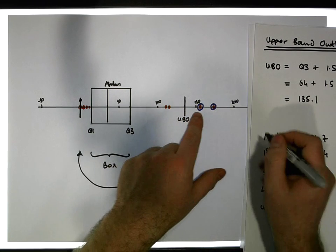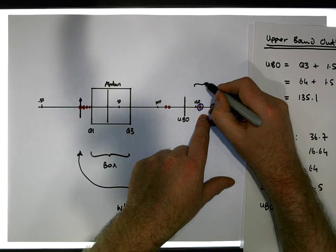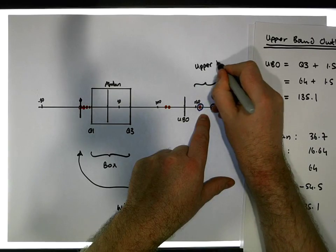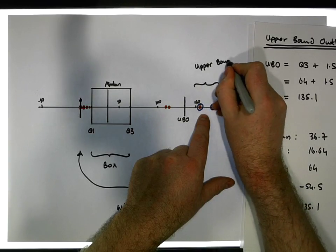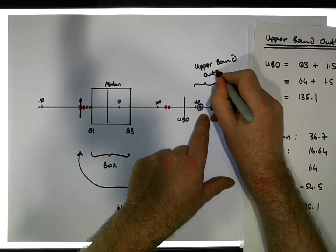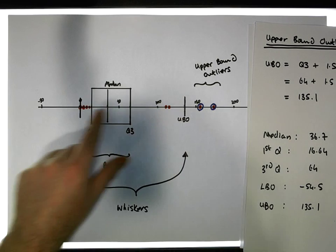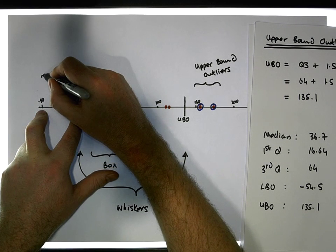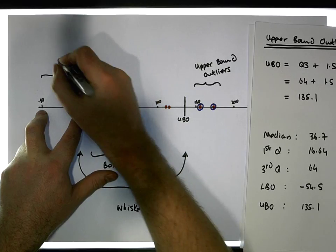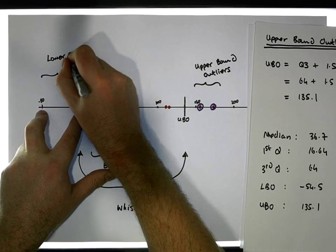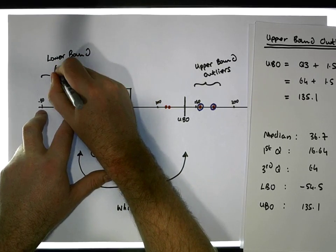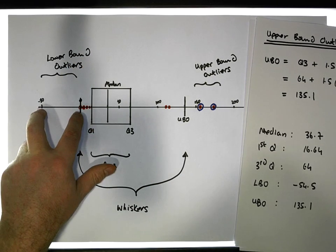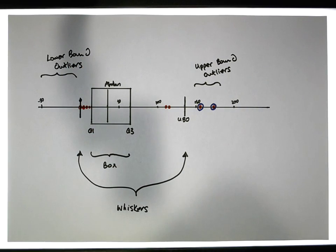So what we end up with is the box and two whiskers. Anything bigger than the upper bound outlier threshold is classified as an upper bound outlier, and anything less than the lower bound outlier threshold would be classified as a lower bound outlier. In this particular situation, we don't have any lower bound outliers.